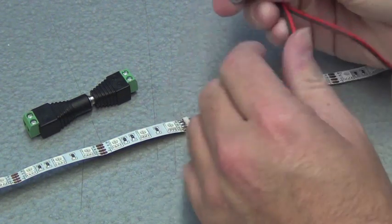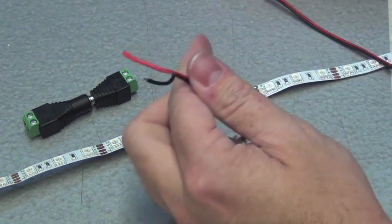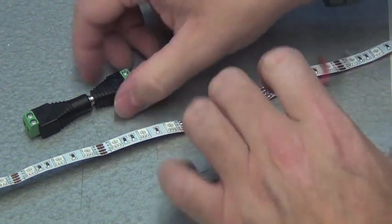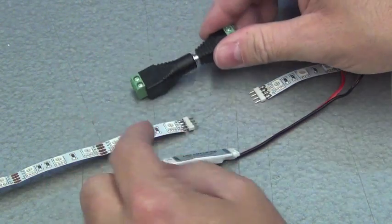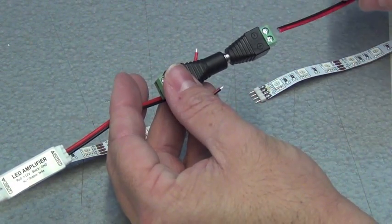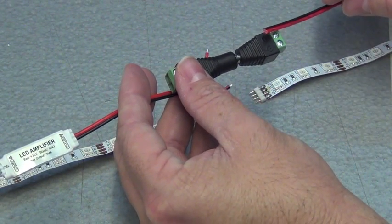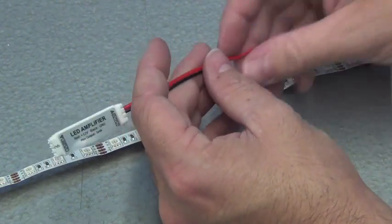Another option that you have is going to be to use your male and female barrel connectors. Now your male and female barrel connectors will plug together. So you can take the wire from your amplifier and plug it into one side, and then the wire coming from your power supply into the other side. So you have two ways of connecting it.